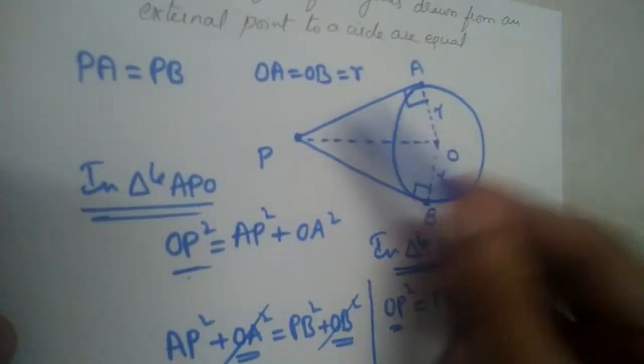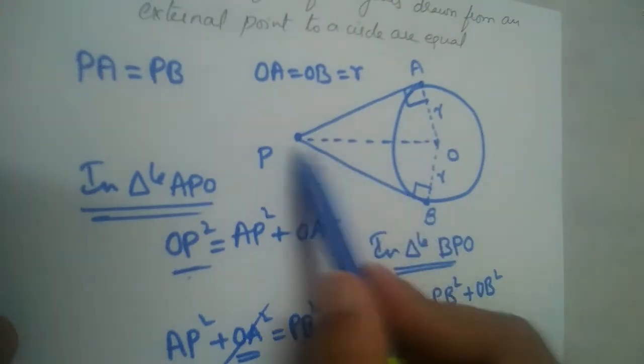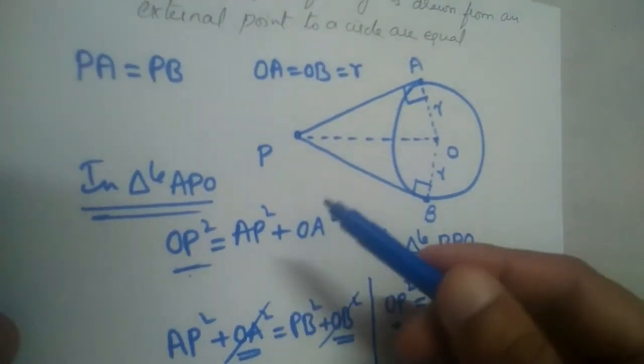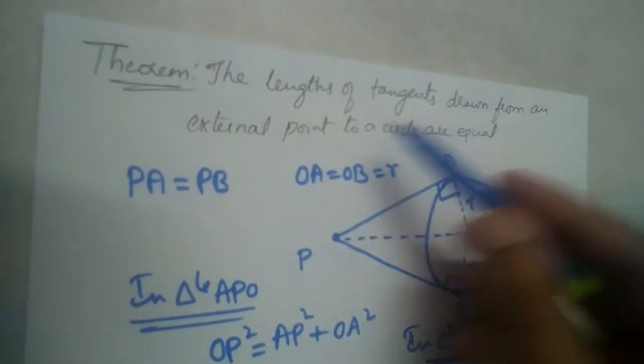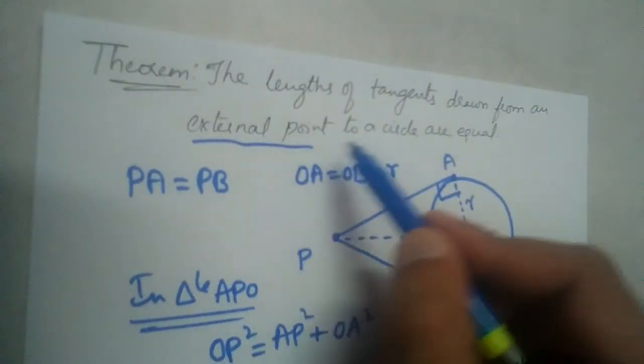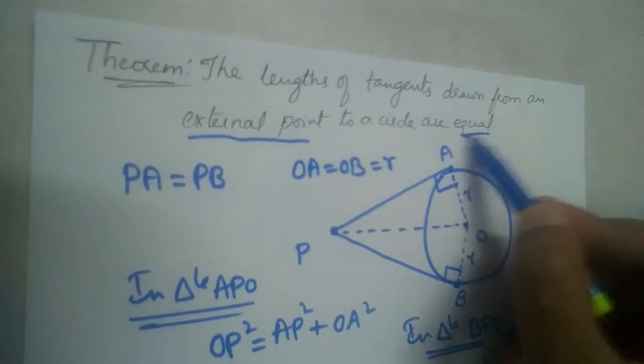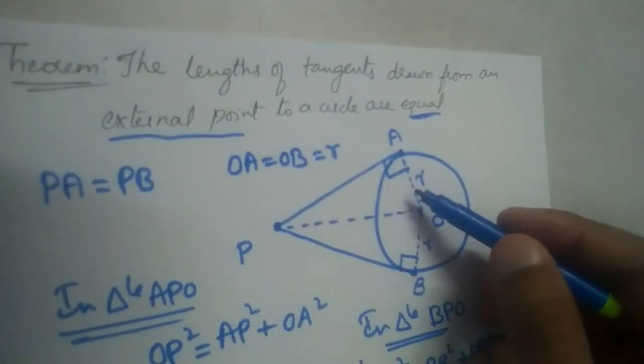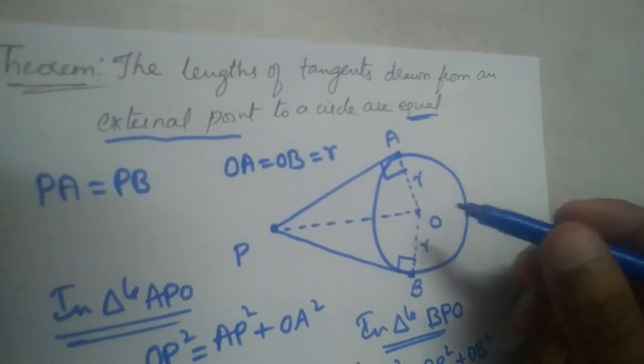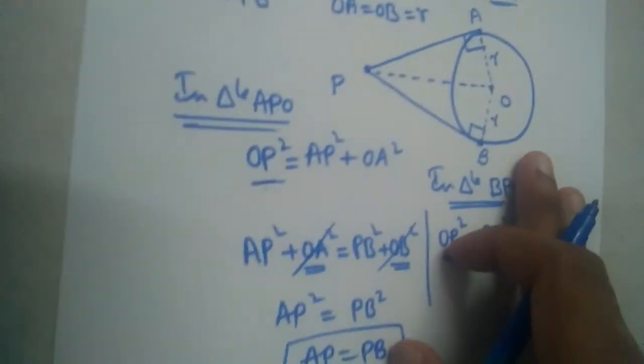So, AP and this BP both are equal. The lengths of tangents drawn from external point outside to a circle are equal. We can use this, we can prove this using similarity of triangles concepts also but this is the easiest proof.